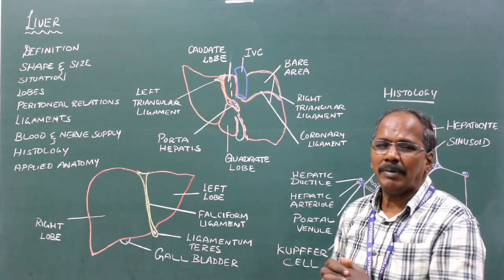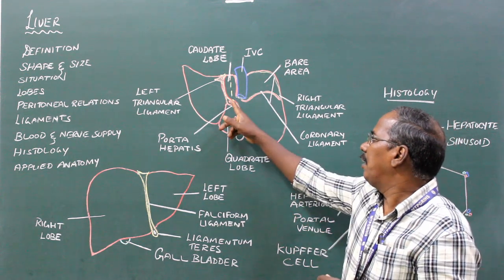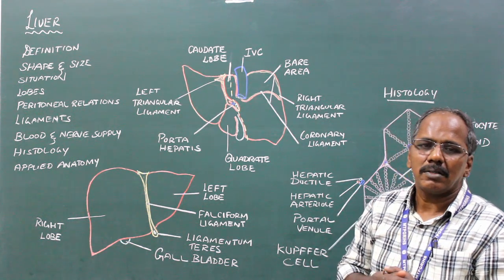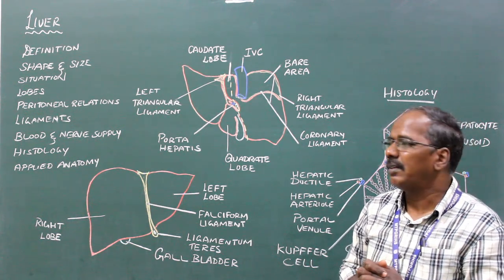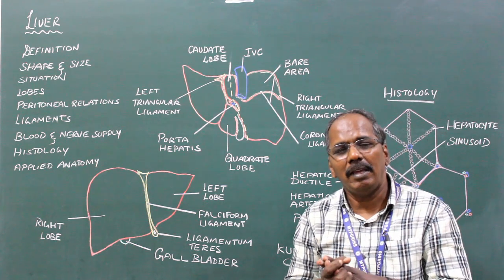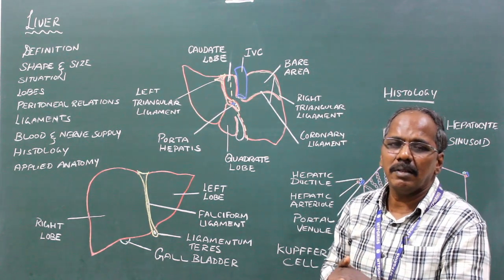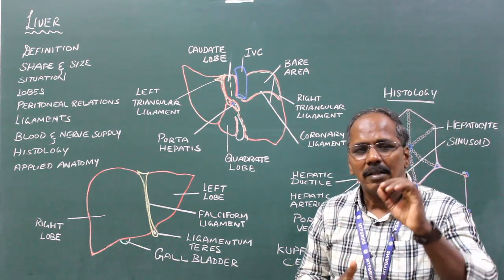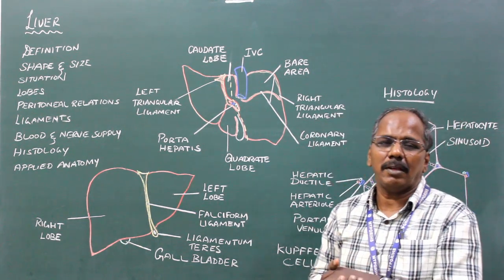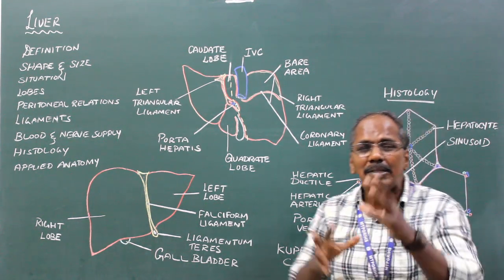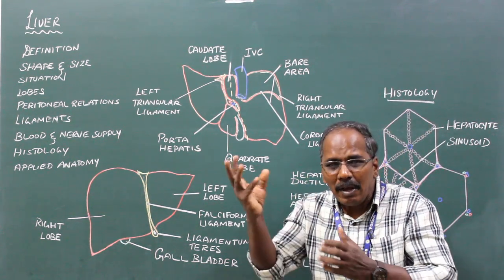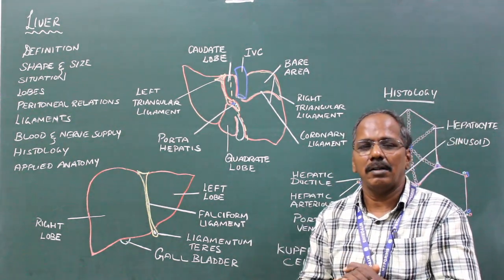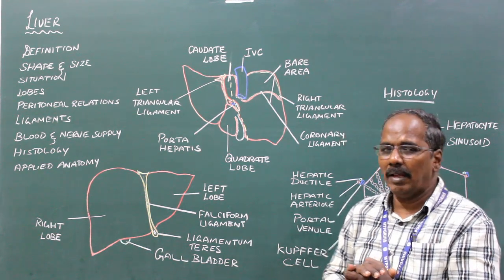Blood supply: the hepatic artery and the portal vein supply the liver. Venous drainage: the hepatic veins drain the liver and drain into the inferior vena cava. Nerve supply: there are sympathetic and parasympathetic components. Sympathetic by the celiac plexus derived from the T7 to T9 segments of the spinal cord. Parasympathetic by the right and left vagal nerves.